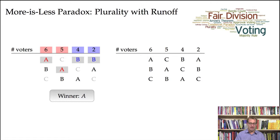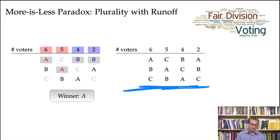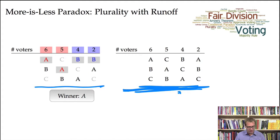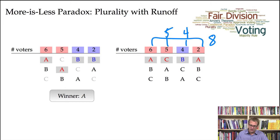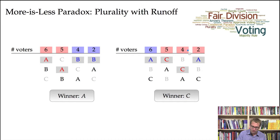So A wins in election E. Now remember, in the scenario on the right — election E prime — candidate A received more support. So since A won in E and has more support in E prime, we would naturally expect A to win. But what happens is candidate A now has eight votes, C has five, and B has four. Nobody has a simple majority, so we drop the candidate with the fewest first-place votes. Now it's candidate B that gets dropped. B's votes transfer to candidate C, and lo and behold, candidate C wins the election.